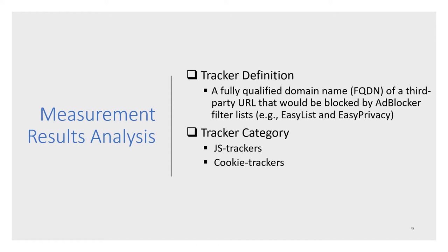I will present some interesting results about web tracking on mobile and desktop environments. First, let me introduce the definition of a tracker in our work. A tracker is a fully qualified domain name of a third-party URL that would be blocked by ad block filter lists, such as EasyList or EasyPrivacy. We divided trackers into two categories: JS trackers, which use at least one JavaScript API for tracking, and cookie trackers, which place cookies for tracking purposes.